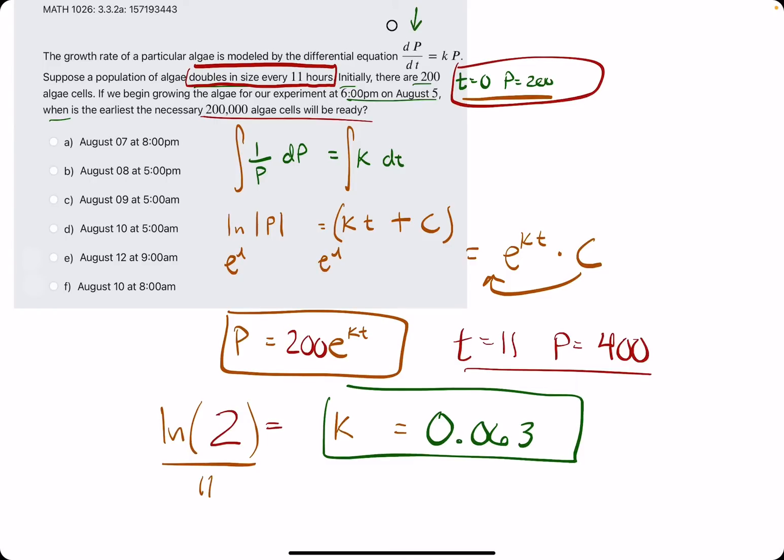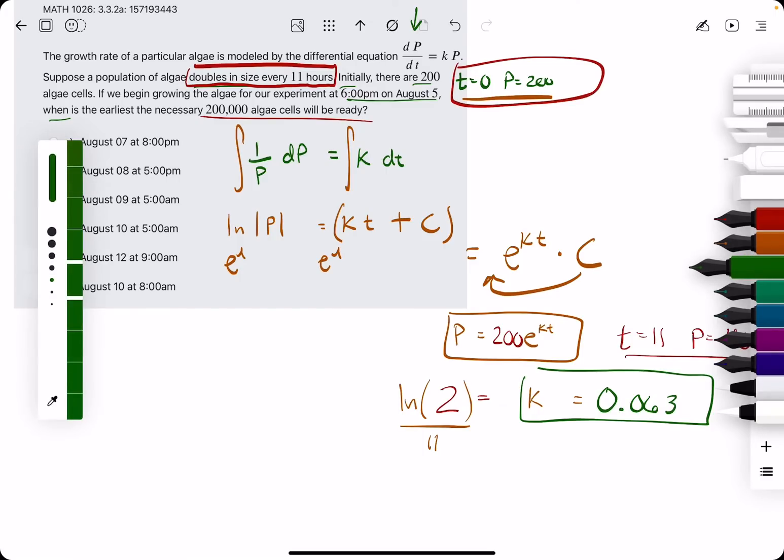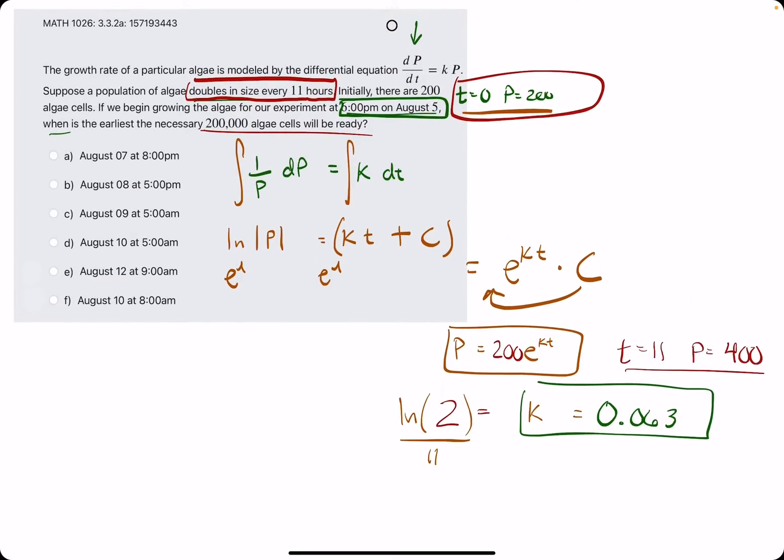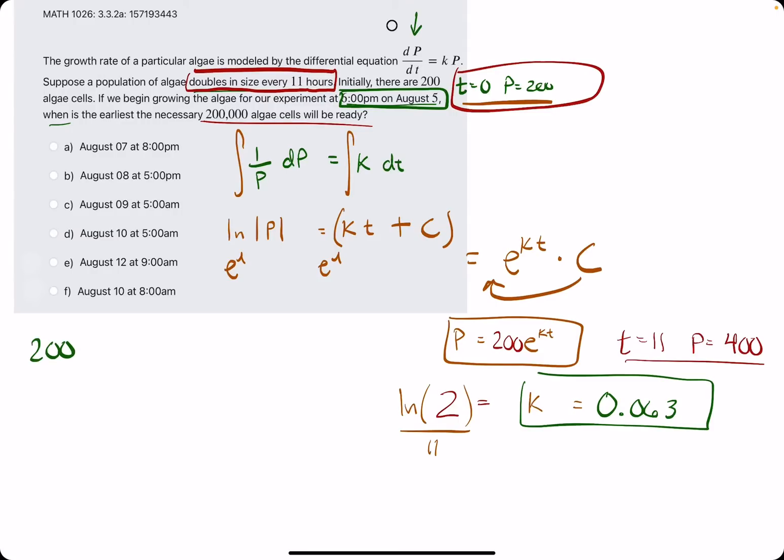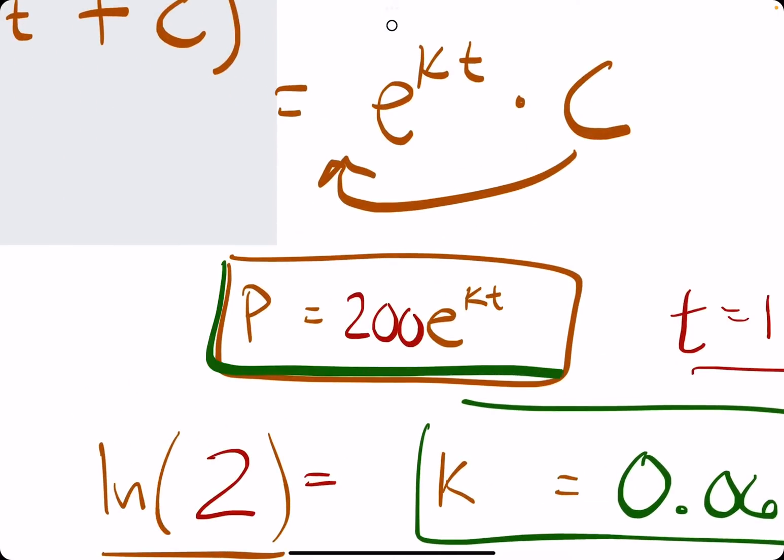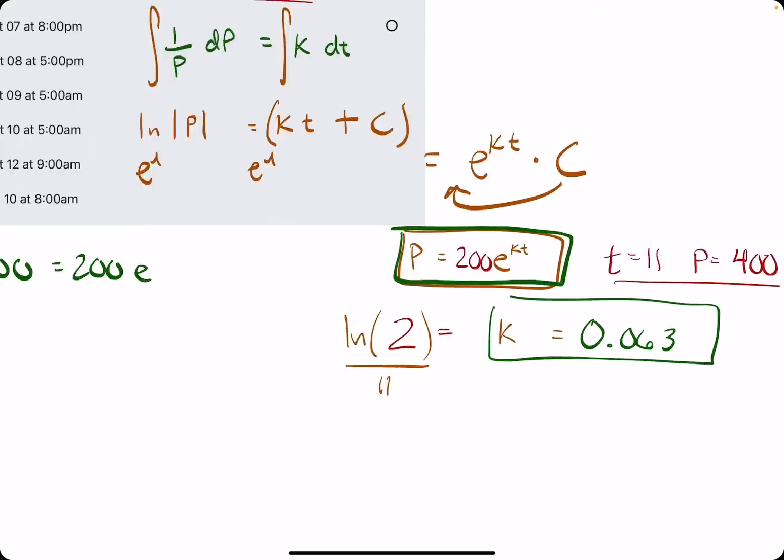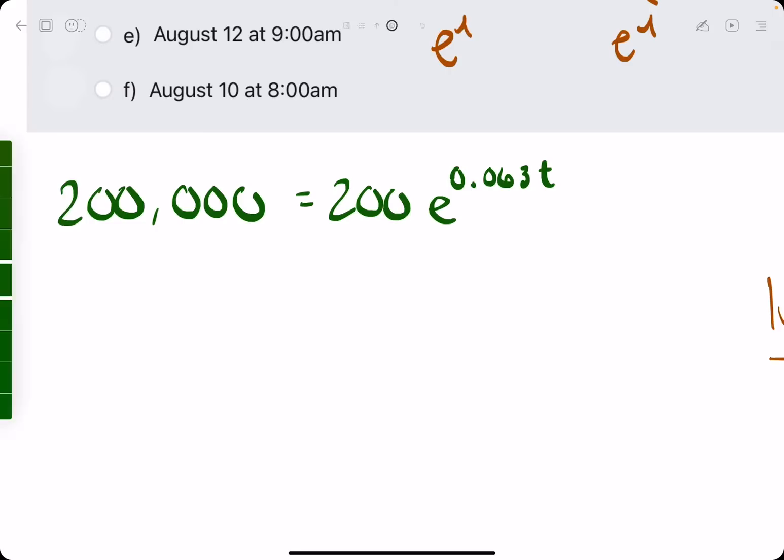Now the goal is to find the time when 200,000 algae cells will be ready. So what that's saying is, if the population has achieved 200,000, what must the time T be? Then we will use that time and add it on to our initial start time there in terms of the time and day given. So anyway, so we have 200,000 is our P value. So again, we're setting up, we're plugging in 200,000 for P. We still have 200 E to the K, which we now know is 0.063. And the goal is to solve for this T. So let's jump to it.